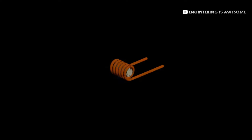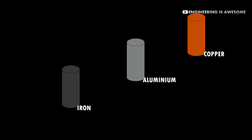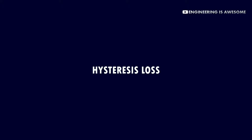From this we can observe that the resistance of the metal which we are using plays a major role in the heating process. For example, metals with high resistance like iron will heat up much faster than metals with low resistance like copper and aluminum. Although the quick heating of iron is not only because of its high resistance but also due to another factor known as hysteresis loss.